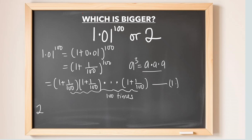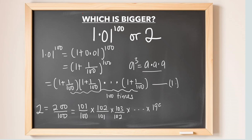Looking at the right-hand side, when you have 2, it is the same thing as 200 over 100. This can be broken down as a telescoping product: 101 over 100, multiplied by 102 over 101, multiplied by 103 over 102, continuing through 199 over 198, multiplied by 200 over 199. This is still 200 over 100, because 101 cancels 101, 102 cancels 102, all the way through 199 cancels 199, leaving 200 over 100.